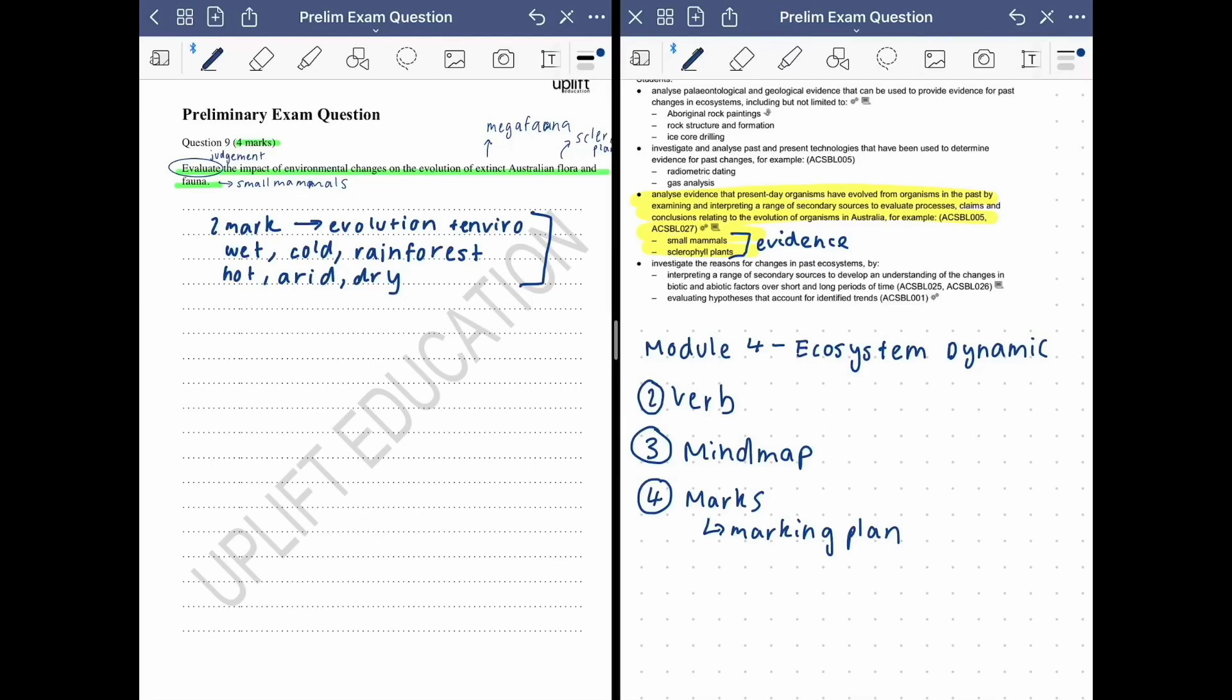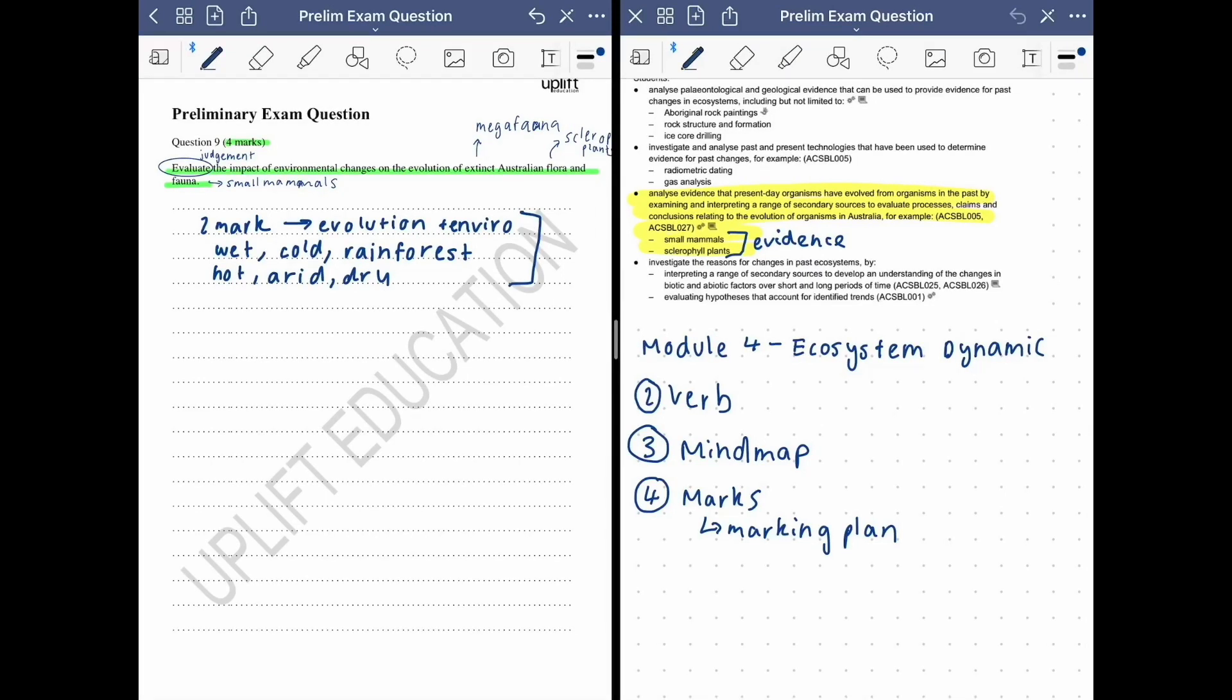In our response, we need to explain why Australia went from a wet, cold rainforest abundant climate to the hot, arid, dry climate we know today. So from class, you guys should know that previously Australia was closer to Antarctica. And then this would prove reason as to why we had a colder climate than the one we have today, since Australia was closer to the equator nowadays. Since we're closer to the equator and not the South Pole, we get more sunlight, hence we've got a hotter climate.